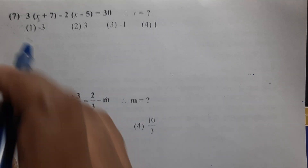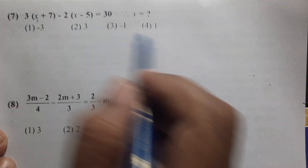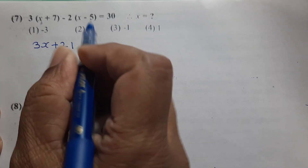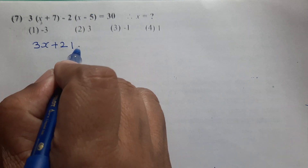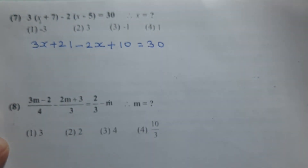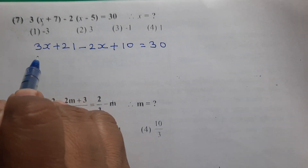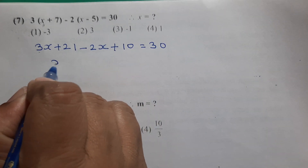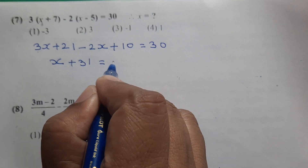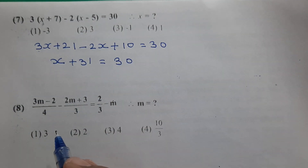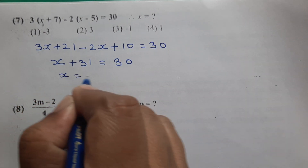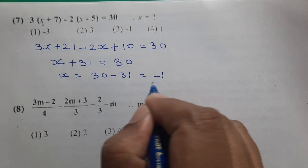Question number 7: Solving the bracket equation — multiply 3 to get 3x plus 21, and multiply minus 2 to get minus 2x plus 10. Combined: 3x minus 2x plus 31 equals 30, so x equals 30 minus 31, giving x equals minus 1. The answer is option number 3.